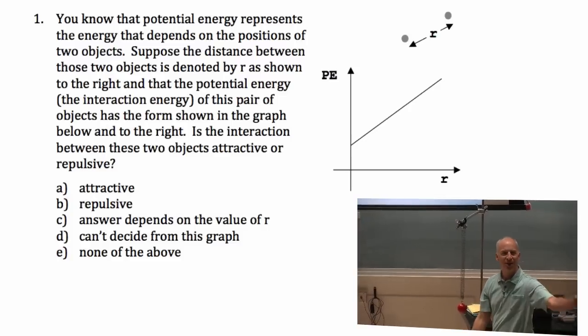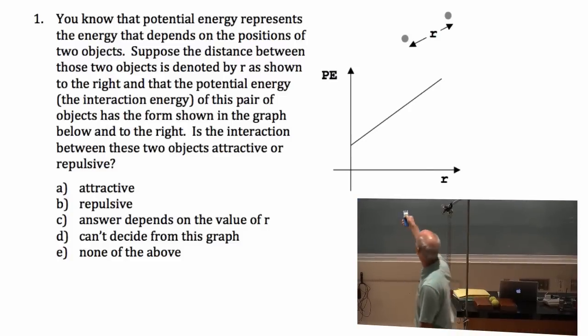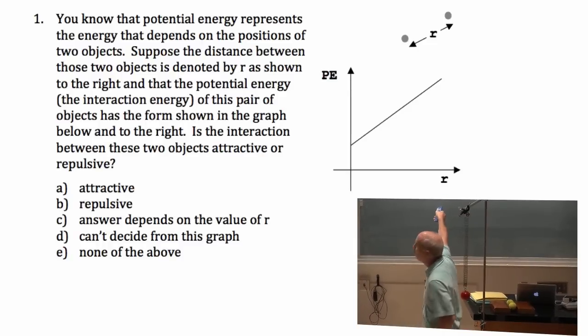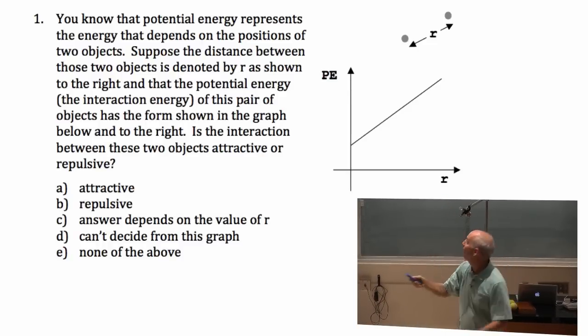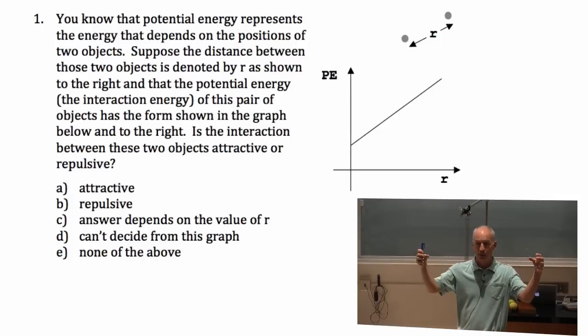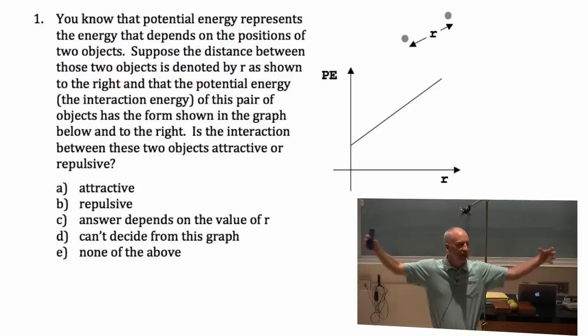Suppose, so here's another unphysical, unreal potential energy. Suppose the potential energy varied with the distance between them in that way right there. So, the potential energy is large when they're far apart. When R is big, R is the distance between them.